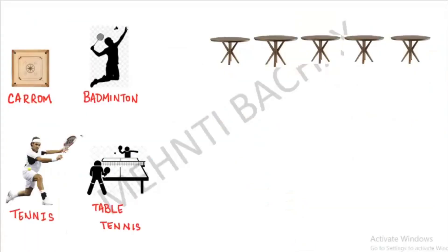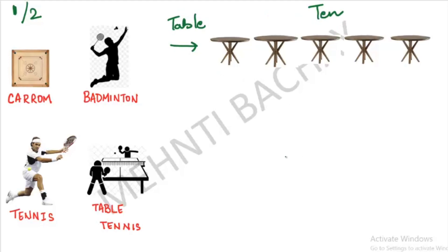First, let's discuss 4 games — Carom, Badminton, Tennis, and Table Tennis — in which one player or two players can play, meaning singles or doubles. We have ten tables. Let's draw a car to remember this.